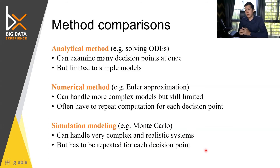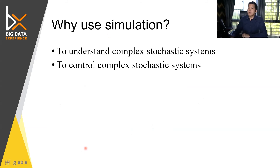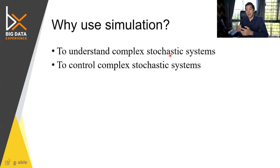Monte Carlo simulation can handle quite realistic systems — you can simulate randomness and incorporate realities into the model. The drawback is that it must repeat many times to get a solution, requiring a lot of computation. However, with modern computing power, this is no longer a problem compared to far more complex computations happening in games and communications. The reason to use simulation is to understand stochastic systems — systems involving randomness — and essentially everything involves randomness to some extent.